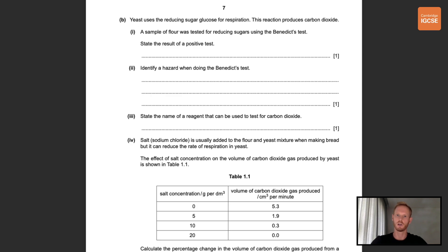Next, yeast uses the reducing sugar glucose for respiration. This reaction produces carbon dioxide. A sample of flour was tested for reducing sugars using the Benedict's test, which we covered in chapter 4 on biological molecules. State the result of a positive test. So Benedict's solution will change from blue to green or yellow, or blue to brick red, depending on the concentration of reducing sugars in the substance being tested. Flour is obviously high in carbohydrates, so we'd expect to see the solution turn red. Identify a hazard when doing the Benedict's test. Well, the test involves heating the mixture of the Benedict's solution and the test substance, so we could have put getting burned or scalded when heating the reagent. However, I've put that Benedict's is irritant and corrosive.